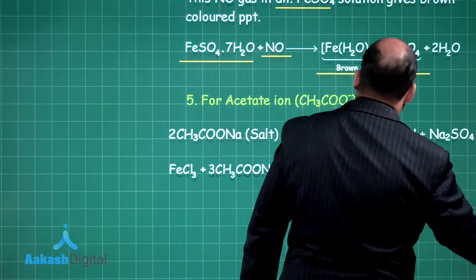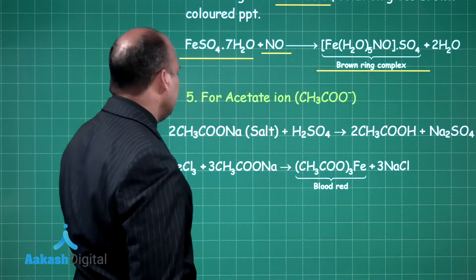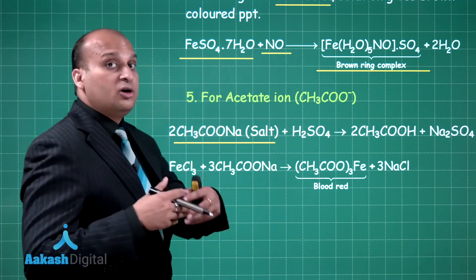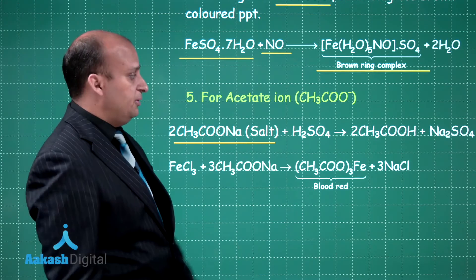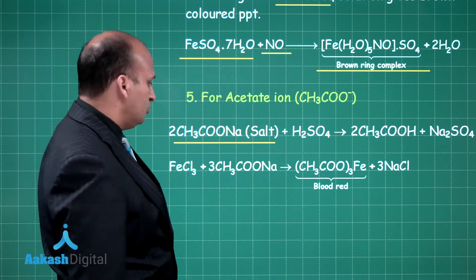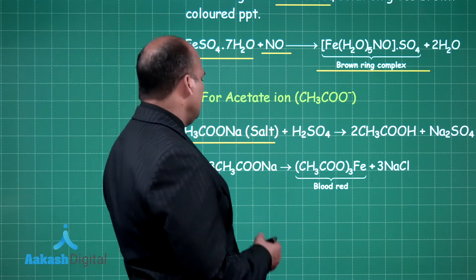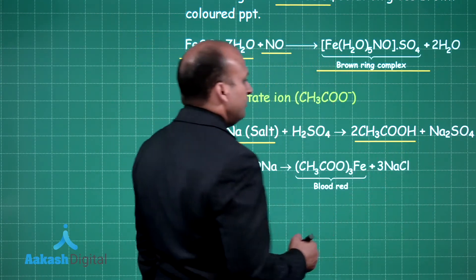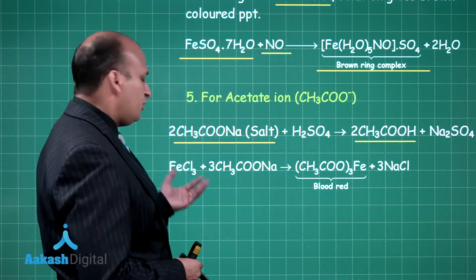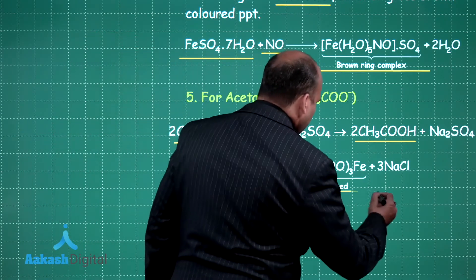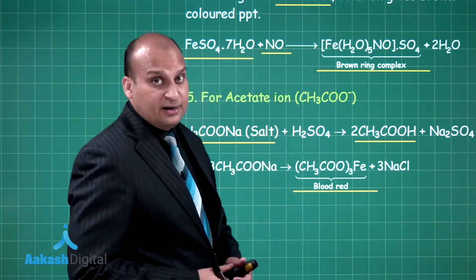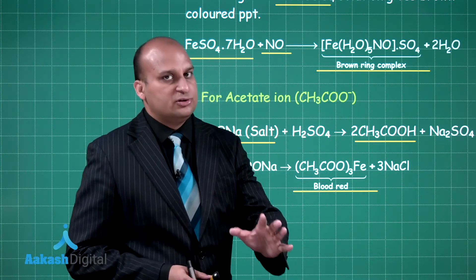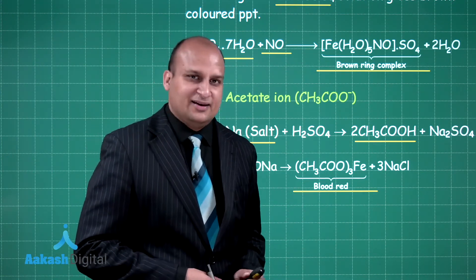For the acetate ion: you add H2SO4 to the salt, producing acetic acid plus Na2SO4. If you then add FeCl3, you get blood red colored ferric acetate. This blood red coloration confirms that the salt contains the acetate ion.